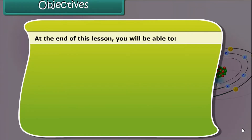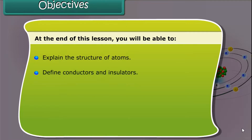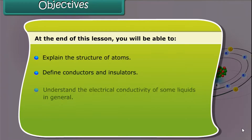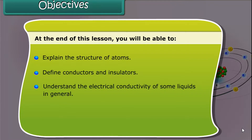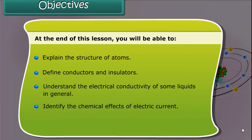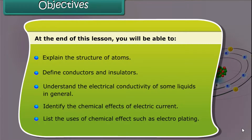Objectives: At the end of this lesson, you'll be able to explain the structure of atoms, define conductors and insulators, understand the electrical conductivity of some liquids in general, identify the chemical effects of electric current, and list the uses of chemical effects such as electroplating.